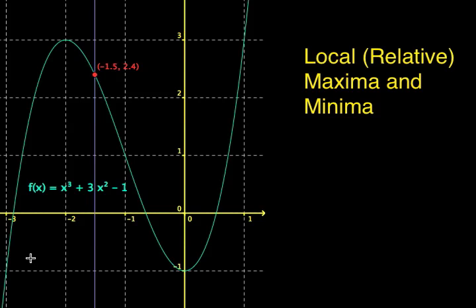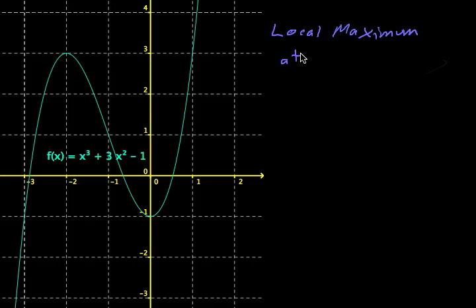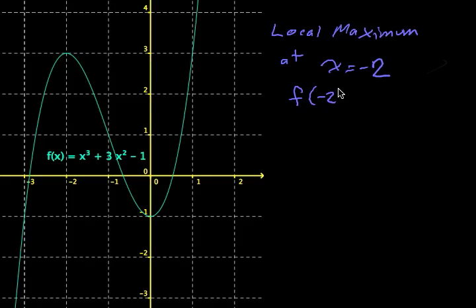Let's look at how we describe these things in mathematical notation. We say that we have a local maximum at — and this is where we have to be careful about x and y. The location of the maximum is the x value, so we have a local maximum at x equals negative 2. When x equals negative 2, the function gives us the local maximum value, found by plugging negative 2 into the function. So f of negative 2 equals 3, and this is our actual maximum value.